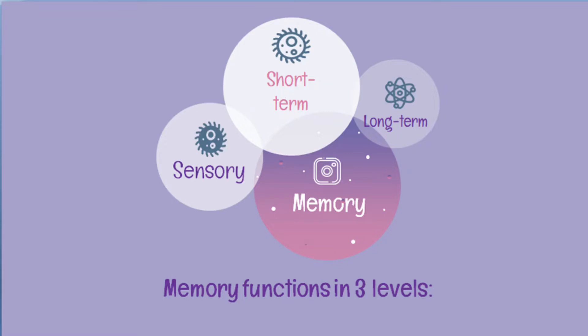Sensory memory is the level that allows information from the external environment to be perceived by an individual through the senses. Basically, we have five senses: sight, smell, taste, touch, and hearing. Usually, our senses perceive chemical and physical stimuli. However, not all stimuli are perceived by sensory memory. The mind only selects information which are useful for the immediate future, and it is then transferred to the short-term memory.